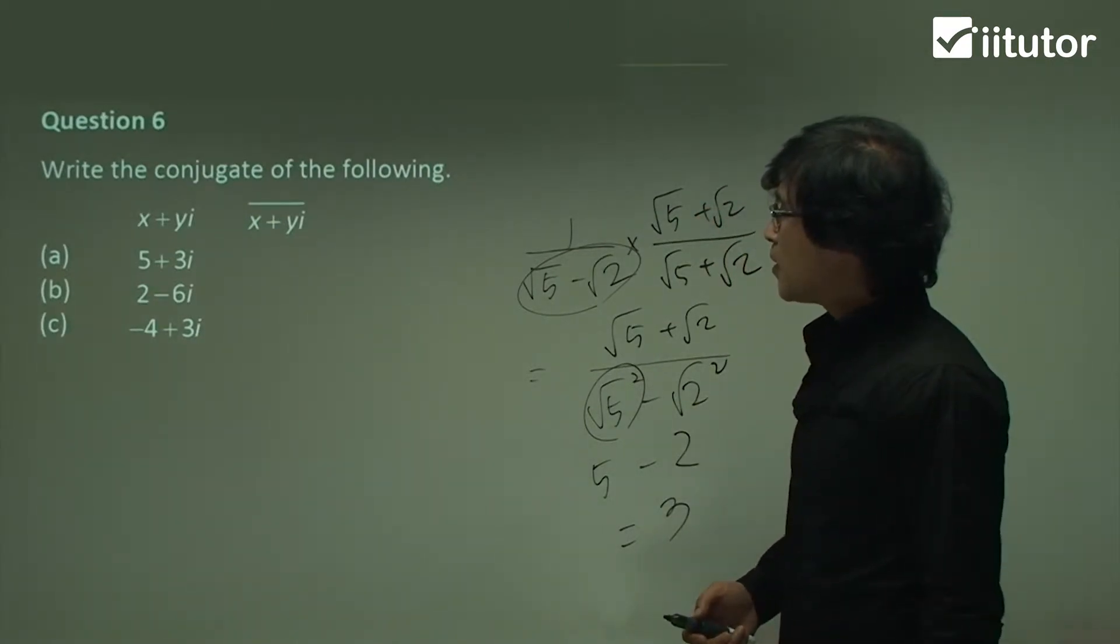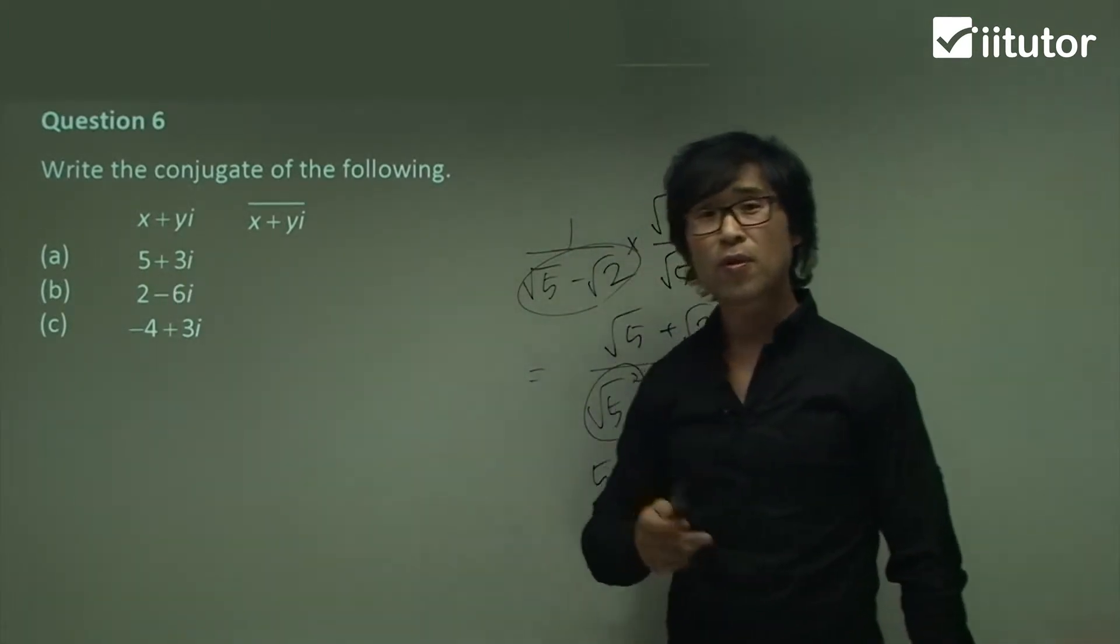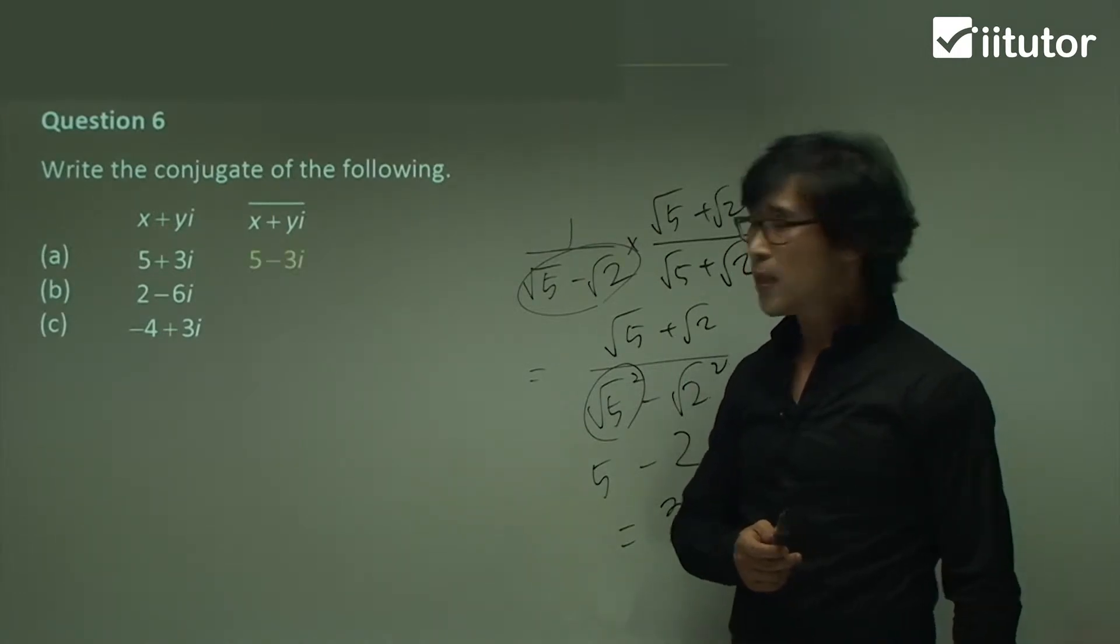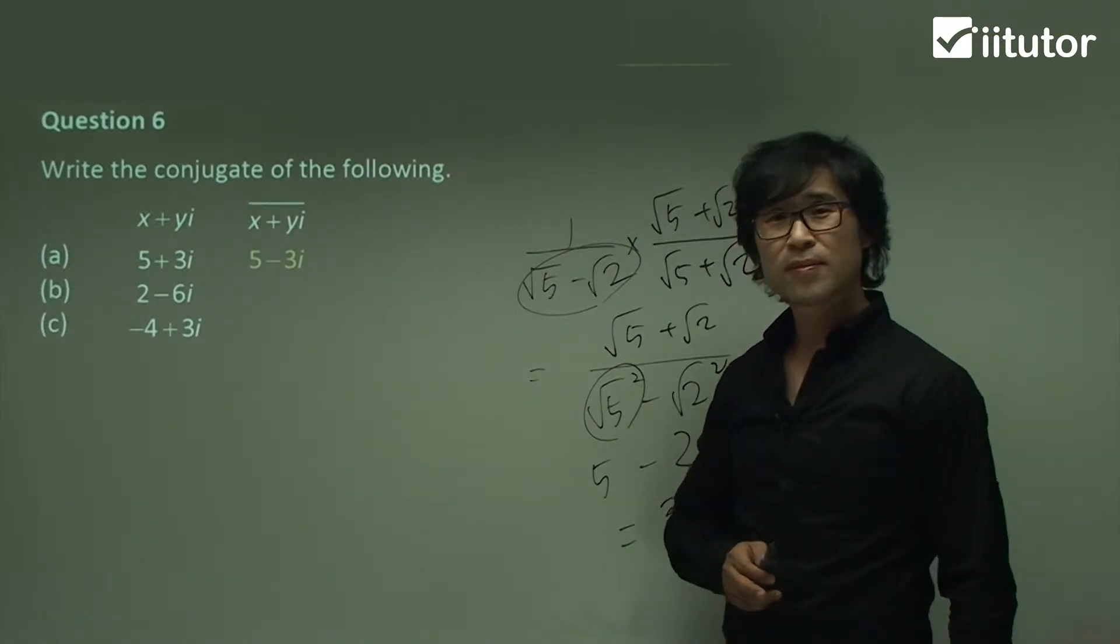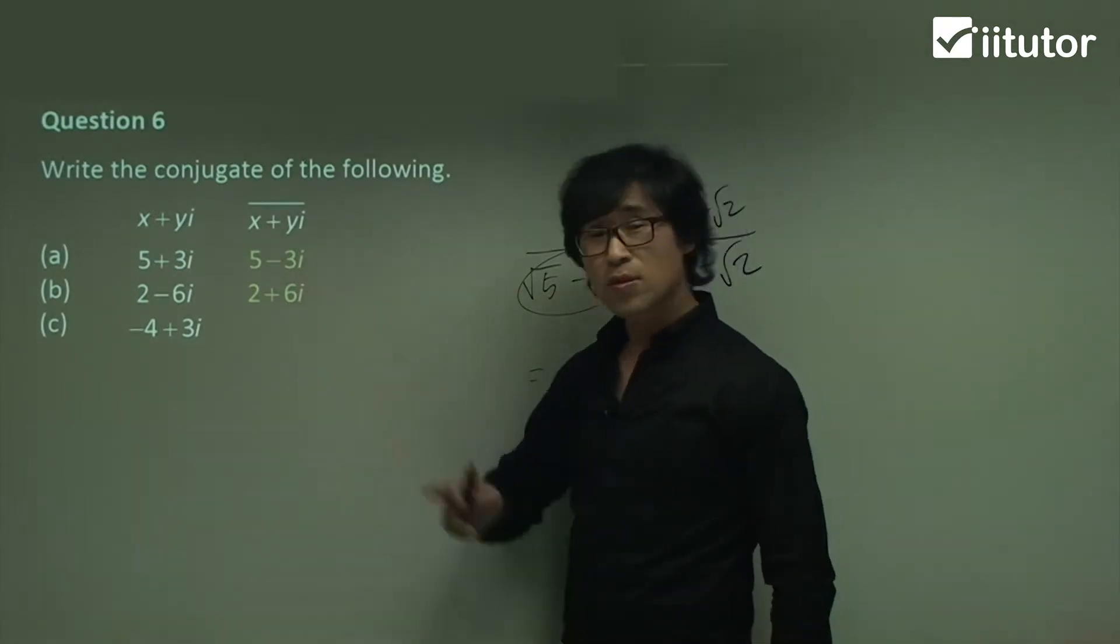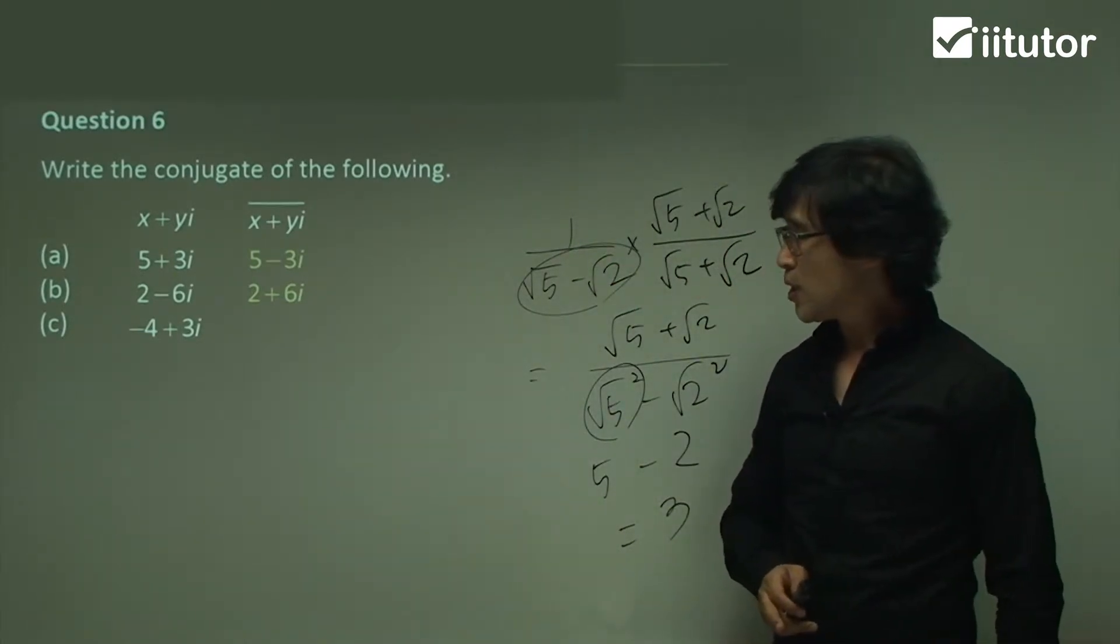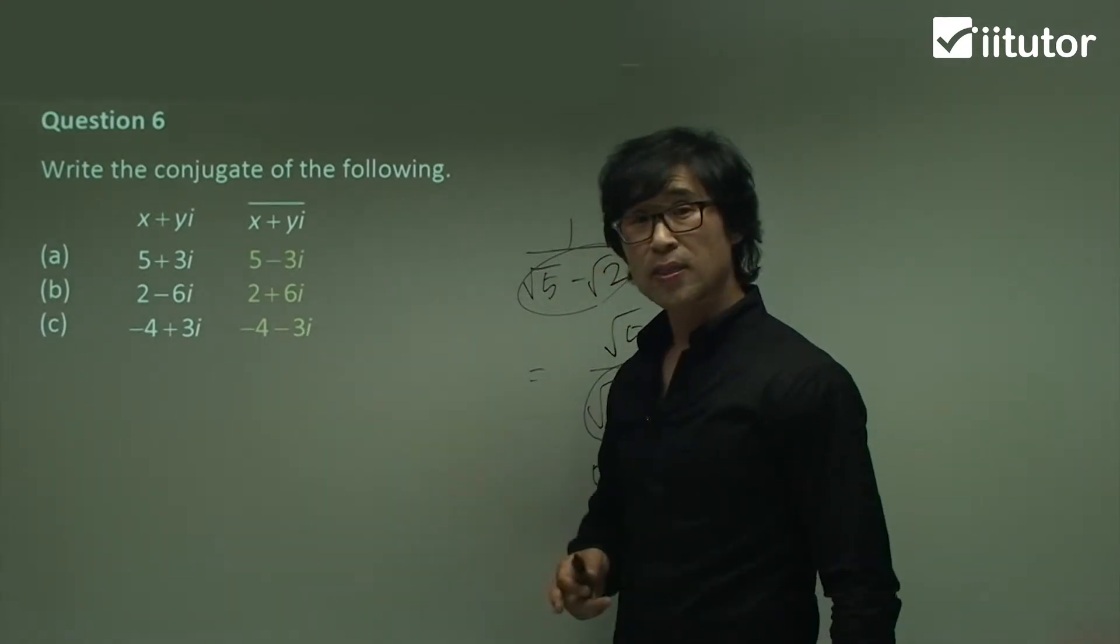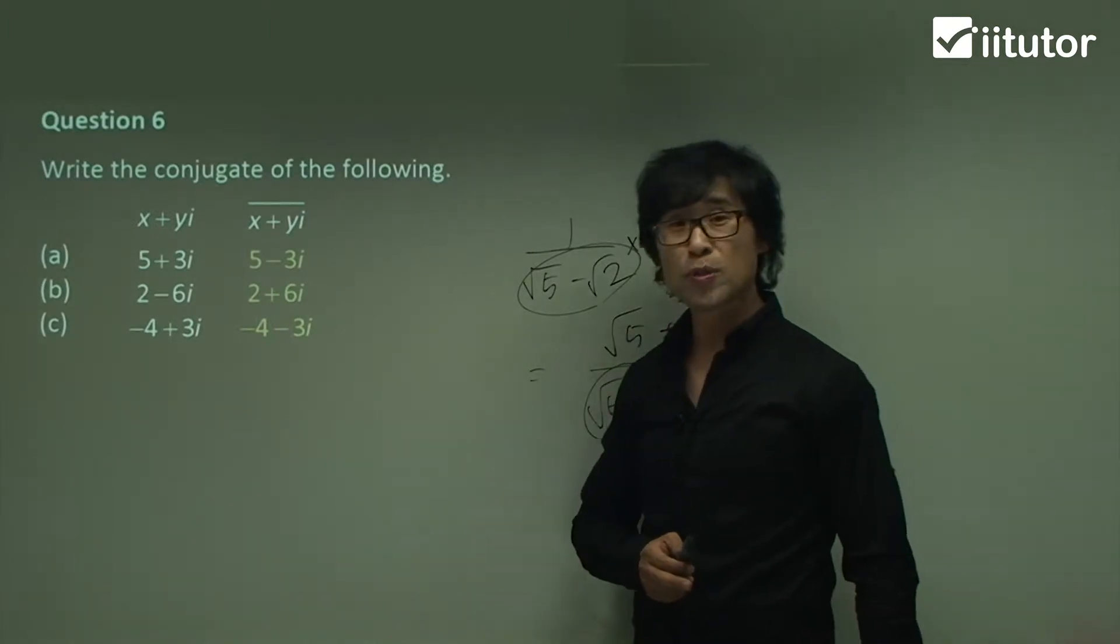Question 6. Well, the first one. So conjugate pair. What is the conjugate pair of 5 plus 3i? 5 minus 3i. I'll give you just one second to answer for part b. Yeah. 2 plus 6i. How do you think the third part? Don't worry about this sign. So negative 4 will remain unchanged, only changing the coefficient just in front of the i. That's all you need to do. So that was a very simple question regarding the conjugate pair.